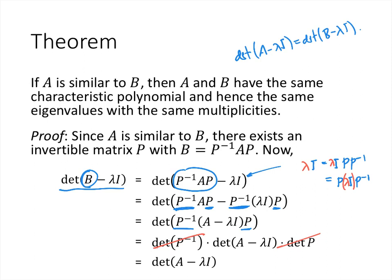So for two matrices to be similar, they must have the exact same characteristic polynomial and the exact same eigenvalues with the exact same multiplicities. We'll use similarity to replace a given matrix A by a better matrix B that shares the same characteristic polynomial and eigenvalues, though the associated vectors may change.